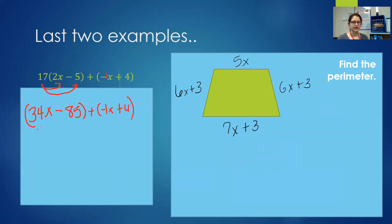We're going to write them stacked. Negative 1x plus 4. So 34 minus 1, that is something we can do. We get 33x. 85 plus 4. Now we see that this 85 is a negative. So different signs tell us to subtract. 85 minus 4 is 81. We have more negatives so it's a minus 81.